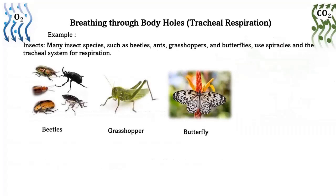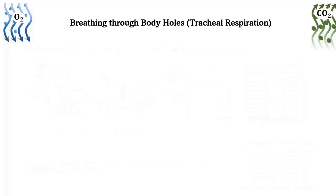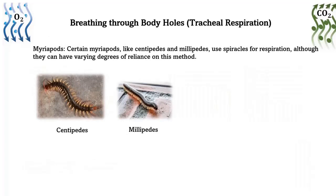Examples of tracheal respiration: insects — many insect species such as beetles, ants, grasshoppers, and butterflies use spiracles and the tracheal system for respiration. Arachnids — some arachnids including spiders and scorpions have spiracles for respiration, although they tend to rely more on book lungs or other specialized structures. Myriapods — certain myriapods like centipedes and millipedes use spiracles for respiration, although they can have varying degrees of reliance on this method.